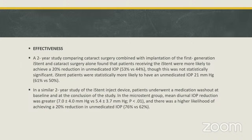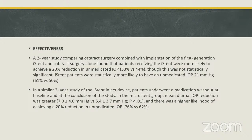Regarding effectiveness: a two-year study comparing cataract surgery combined with the first generation eye stent versus cataract surgery alone found that eye stent patients were more likely to achieve a 20% reduction in unmedicated IOP, though it was not statistically significant. Eye stent patients were statistically more likely to have unmedicated IOP of 21 mmHg or less. In a similar two-year study of the eye stent inject, after medication washout at baseline, the microstent group showed greater mean diurnal IOP reduction and a higher likelihood of achieving 20% reduction in unmedicated IOP.